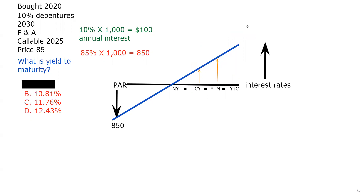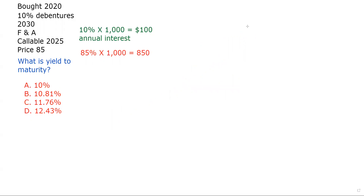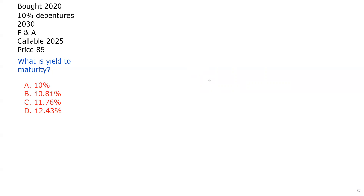The test taker said, 'Is there an easier way to do this?' — they were telling him about the rule of thumb approximation of yield to maturity, and the answer is certainly yes. Let's go back to the question: the customer bought in 2020 a 10% debenture, matures in 2030, F and A is when they pay interest, callable in 2025, priced at 85. What is the yield to maturity? We figured out the annual interest is $100 — the coupon, nominal fixed stated rate of return.